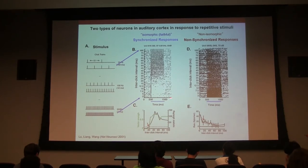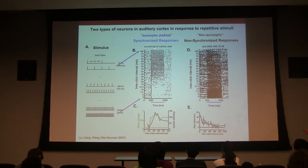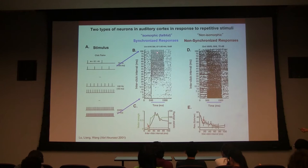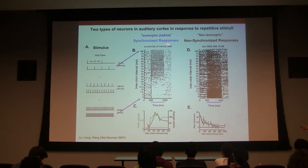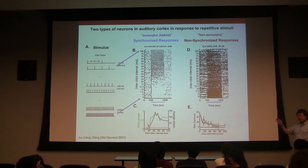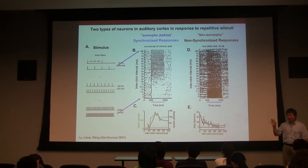One type of neuron in the outer cortex gives a response that is synchronized or phase-locked to slow varying stimuli, and stops responding altogether at fast ones. This part of the response literally mimics the physical structure of the stimulus — we call this synchronized, or in the context of this principle, isomorphic. You see one click here and one response here — it's just like a copy, like putting your hand in a Xerox machine.